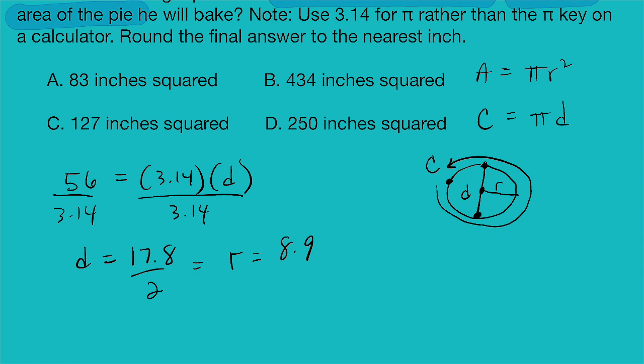And then now we can use the area of a circle equation where the area equals pi r squared. And when I plug that in my calculator, I get 248.7. They tell us to round our final answer to the nearest inch. So we would technically round up to 249 here. But our closest is going to be option D, 250 inches squared as the correct answer.